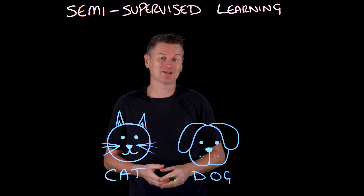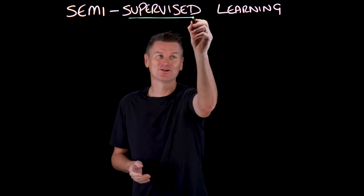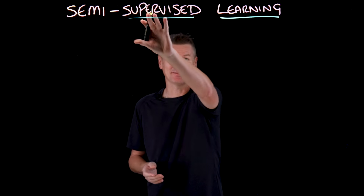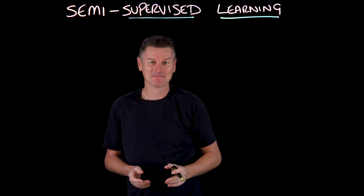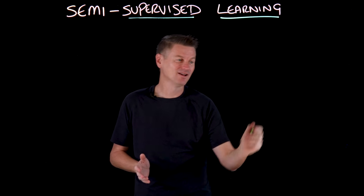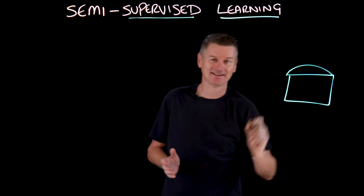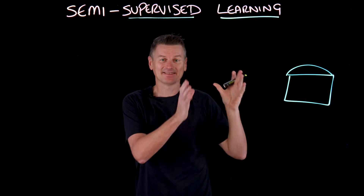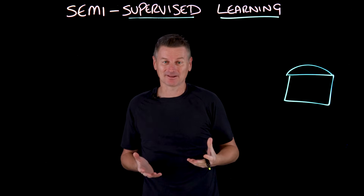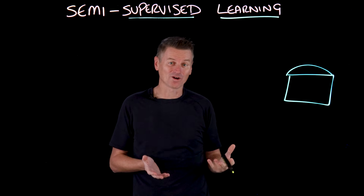We can build a model like that using a process called supervised learning — not semi, just supervised learning. This involves training the model on a dataset, and this dataset has images where they are labeled as either cat or dog.